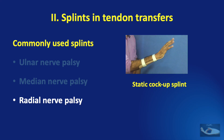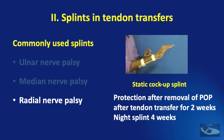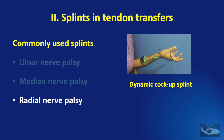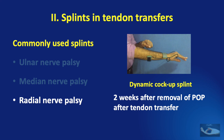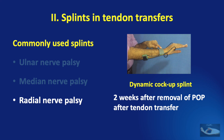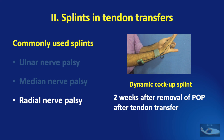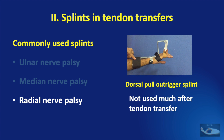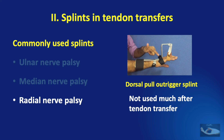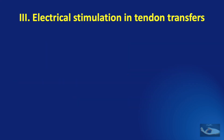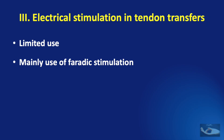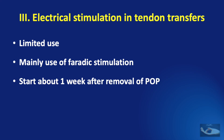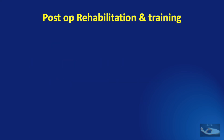Similarly, in radial nerve palsy, the static cock-up splint is used for protection after removal of the POP following tendon transfer. The dynamic cock-up splint helps to strengthen the transferred muscles and its use is started 2 weeks after removal of the POP following tendon transfer. The dorsal pull outrigger splint is not used much after tendon transfer surgery; it is used preoperatively to strengthen the muscles that are going to be transferred. The role of electrical stimulation in tendon transfers is limited — we mainly use faradic stimulation because the muscles are already innervated, starting about 1 week after removal of the POP.